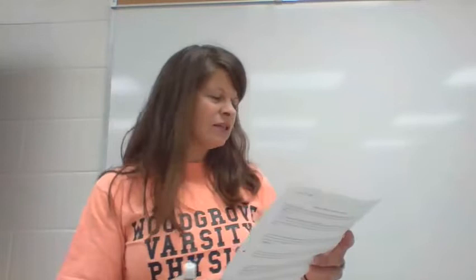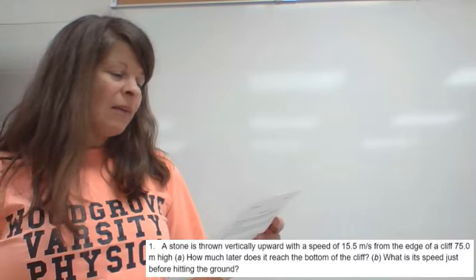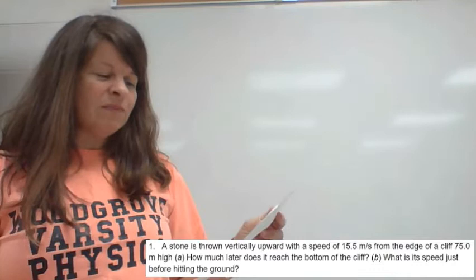So I'm doing number one. A stone is thrown vertically upward with a speed of 15.5 meters per second from the edge of a cliff 75 meters high. How much later does it reach the bottom of the cliff, so they're looking for time. And then part B, what is the speed just before hitting the ground?